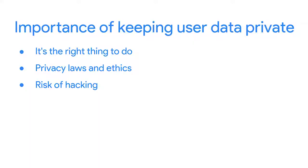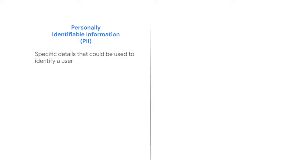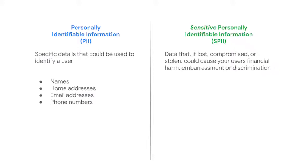A final reason privacy and data security is important is for protecting your company's brand — ensuring that your users perceive your brand positively based on their experience with you. By emphasizing data protection, you gain their trust. Now let's discuss what user data needs protecting. There are two main types of data. The first is personally identifiable information, or PII — specific details that could be used to identify a user, including names, home addresses, email addresses, and phone numbers. The other type is sensitive personally identifiable information, or SPII, which is even more critical.